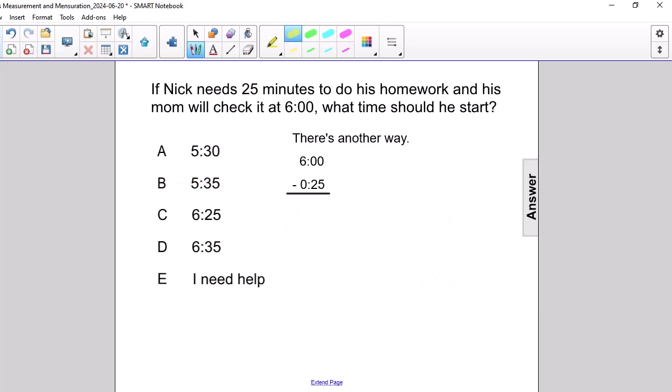There's another way to do the problem, though. We can set this up like an arithmetic problem where I start at 6 o'clock and subtract off 25 minutes. Now, we do need to borrow because here I have 0 minus 2 and 0 minus 5. We need to borrow an hour from the 6. And remember that 60 minutes is equal to 1 hour.